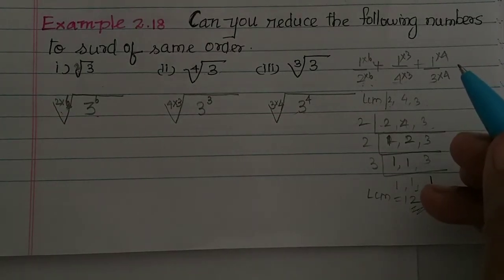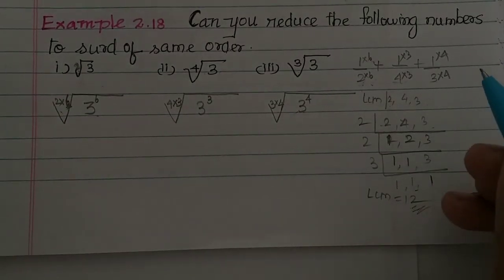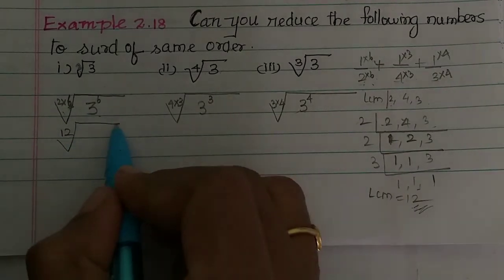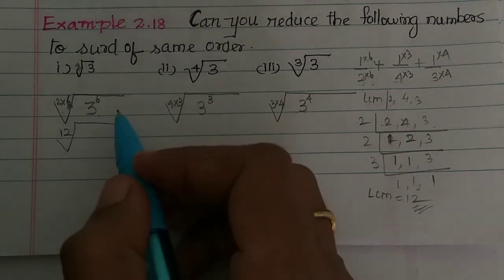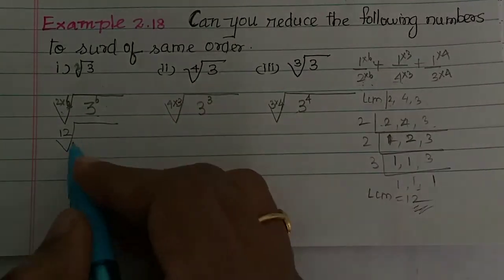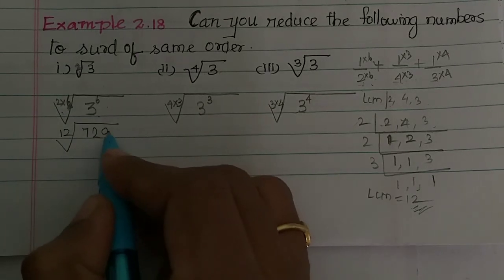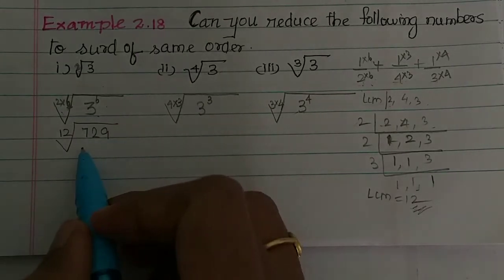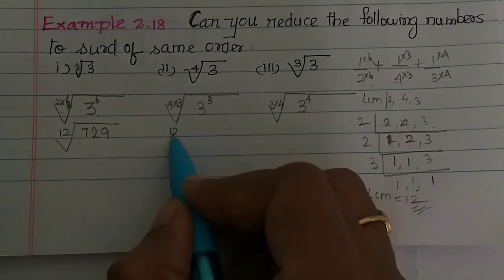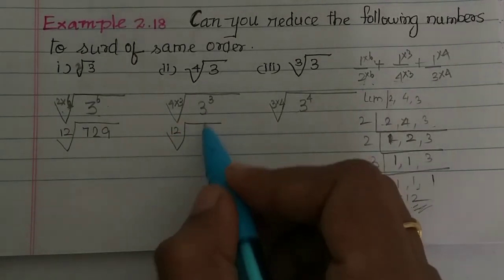So 2 times 6 is 12, so 12th root of 3 power 6. 3 is 6 times multiply, so 3 power 6 is 729. So 4 times 3 is 12, so 12th root of 3 cube is 27.